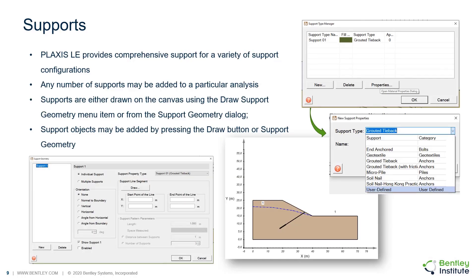If supports are required in the slope stability model, Plexis LE provides comprehensive support for a variety of support configurations under the support menu, including bolts, geotextiles, anchors, and piles. It should be noted that the support geometries are separated from the support properties. Plexis LE maintains a list of support properties independent of applied geometries, in a manner similar to the application of material properties to various regions. This allows the user to create multiple anchor property definitions and mix and match the geometries to which they are applied. Support objects may be added by pressing the Add button under support geometry.